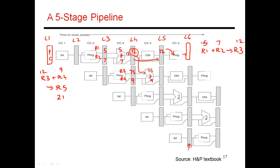All the other gray boxes are just reincarnations of those same six latches. Latch 2, for example, stores instruction 1 at the end of cycle 1. The same latch 2 stores instruction 2 at the end of cycle 2, and so on. So each column is basically latch 2, latch 3, latch 4, latch 5, and so on.